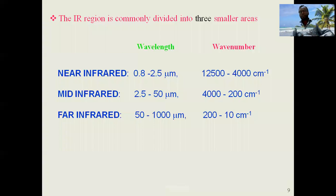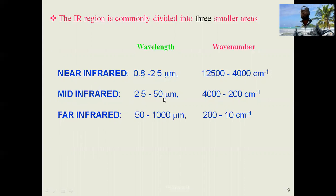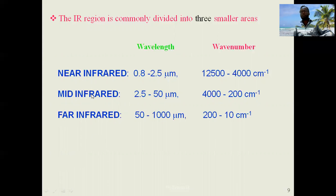The IR region is commonly divided into three sub-regions: near-infrared (0.8–2.8 µm), mid-infrared (2.5–15 µm), and far-infrared (beyond 15 µm). The IR spectra are thus classified into these three parts.